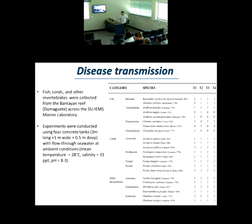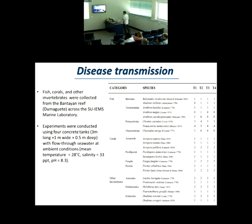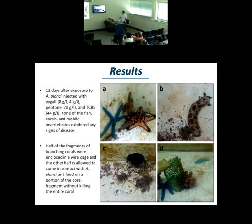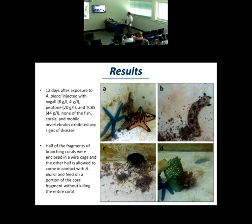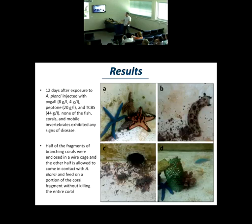Then we did a disease transmission experiment. We needed to know if corals, fish, or other echinoderms got sick. We tested eight species of fish, eight species of corals, and six species of echinoderms at Silliman University in the Philippines. After 12 days of exposure — remembering that Linckia grey and blue starfish showed signs of disease after five days — we put the starfish in contact with the Crown of Thorns for 12 days. After this, there were no signs of disease in any of the other animals.